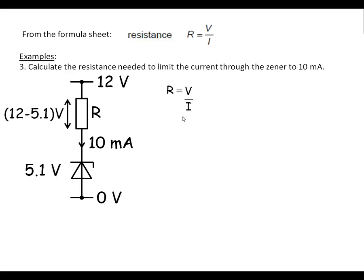Use the equation R equals V over I. Plug in the numbers. That's the voltage across the resistor. That's the current going through it. And that comes up 690 ohms. And there we have it. Ways of using and our calculations using resistors and diodes.